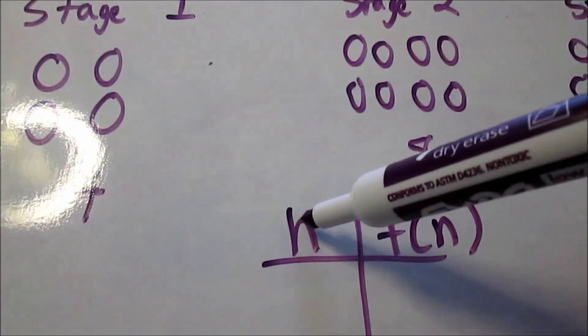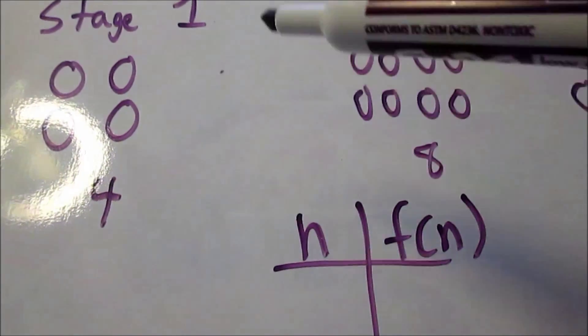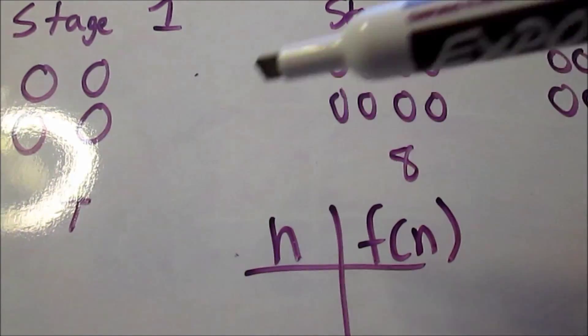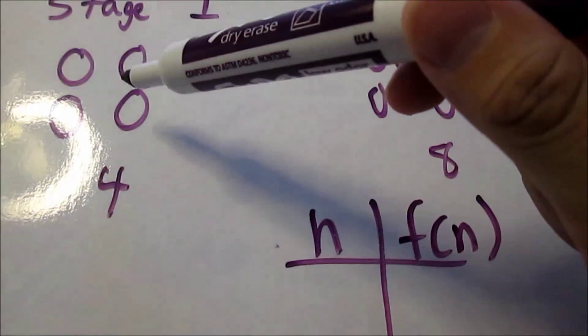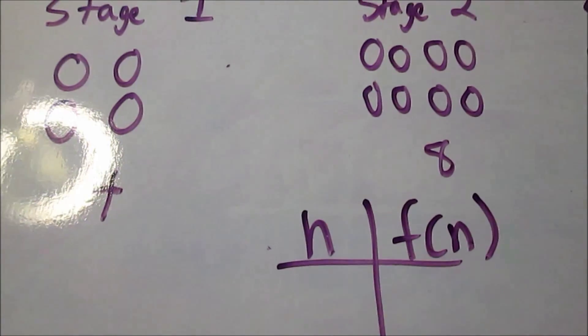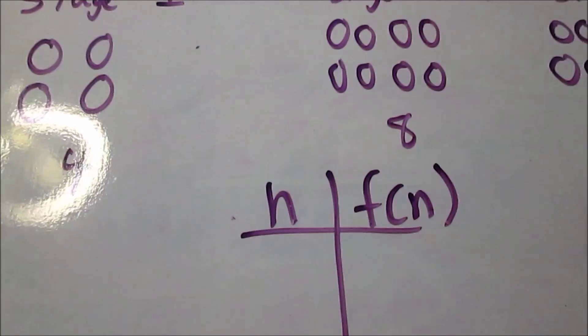This time I'm going to use n and f(n). n is going to stand for the stage number. I could just write stage number here, and that's also fine. f(n) is going to stand for the number of circles. I could also write number of circles here. That will also be okay. This is just short.